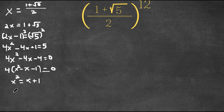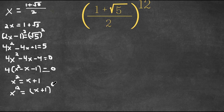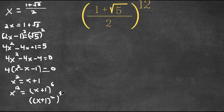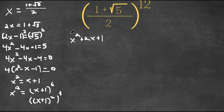And now I'm going to take the power of six on both sides. So x to the power of two times six is x to the power of 12, and this is equal to x plus one to the power of six. We can write that as x plus one squared, to the power of three. And x plus one squared is x squared plus two x plus one, and this is still to the power of three.